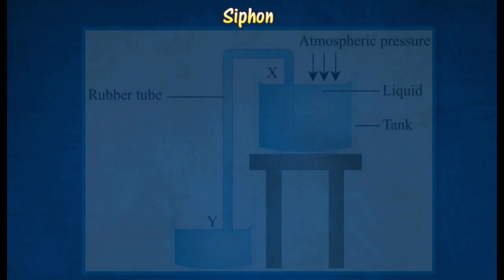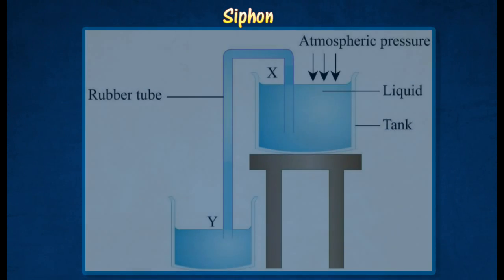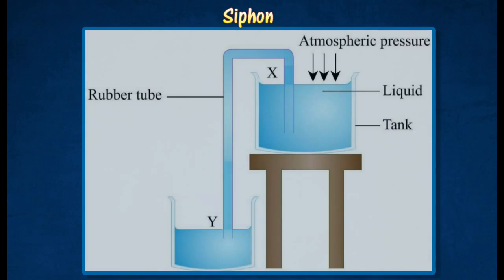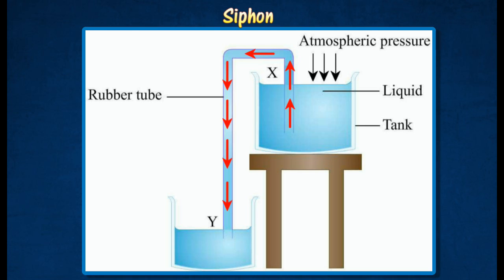A siphon consists of a rubber tube used to remove liquid from a tank. The rubber tube is filled with liquid, and one end is placed in the liquid in the container. When both ends of the tube are opened, liquid flowing out through Y creates a partial vacuum inside the tube.